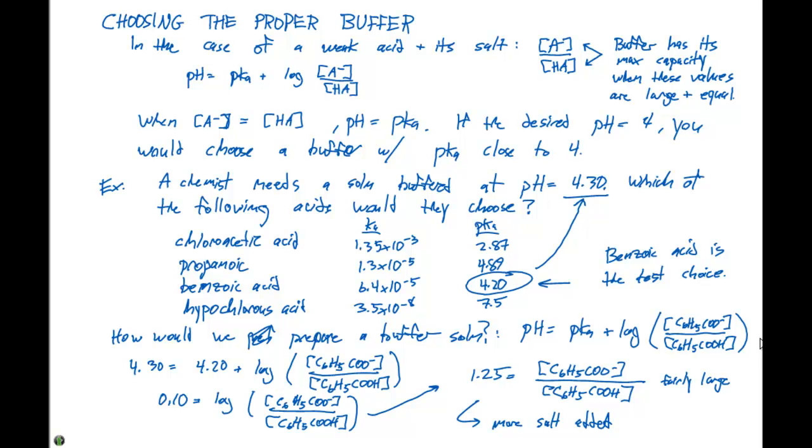In choosing the proper buffer, we want our concentrations to be large and equal, and our pH needs to be as close as it can be to the pKa. If we're given a particular pH, we want to choose the pKa that's closest to it. In this case, if we're choosing a buffer with a pH of 4.3, we would want to choose benzoic acid based on the list of acids that we were given. Then, we can use the Henderson-Hasselbalch equation to determine the proper ratio of A- to HA that we will need, and in this case, we found that more salt needs to be added to make the best buffer solution.